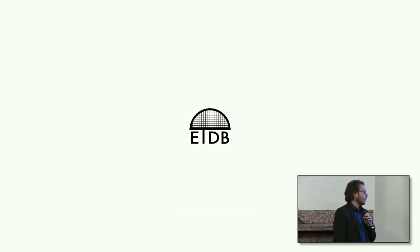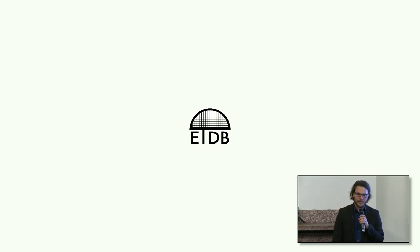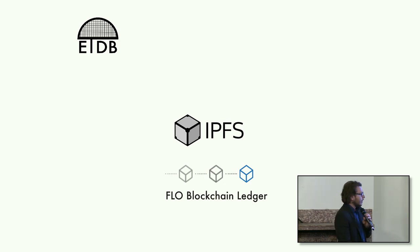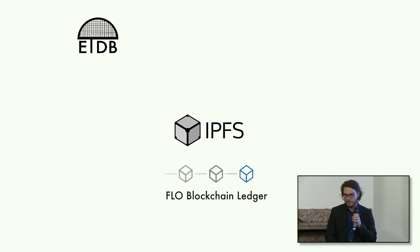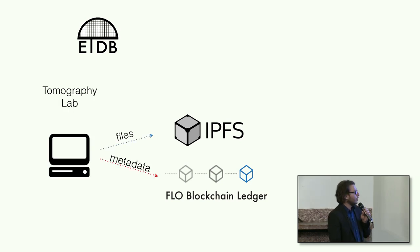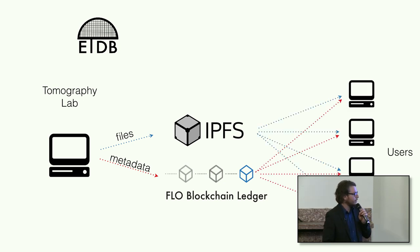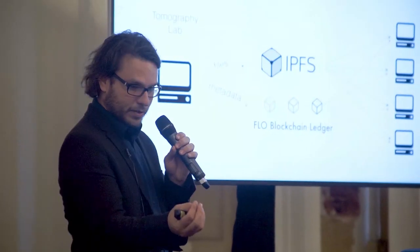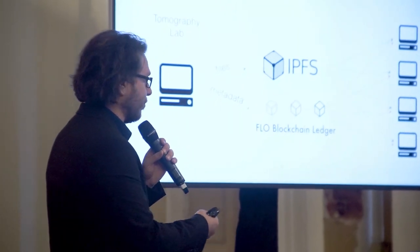To try to solve all that — and this is an experiment — we built an ETDB, which stands for Electron Tomography Database. The ETDB is built on two pieces of technology: IPFS and the Flow Blockchain Ledger. We use OIP to communicate with these two technologies. Our tomography lab server takes our files, puts them on IPFS, takes the hash, puts the metadata, and puts it on the Flow Blockchain. Users can now consume our data not by looking at our server, but simply by looking at the metadata on the Flow Blockchain and on IPFS.